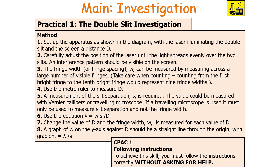Use a metre ruler to measure D (the slit-to-screen distance), and measure the slit separation S using vernier callipers or a travelling microscope — or simply use the markings on the Young's slit itself. Note that a travelling microscope must only be used to measure slit separation, not fringe width. Then use the double slit equation: lambda equals W times S over D. Change the value of D, measure W for each value, and plot a graph of W (y-axis) against D (x-axis). You should get a straight line through the origin with gradient equal to lambda over S, allowing you to calculate the wavelength.